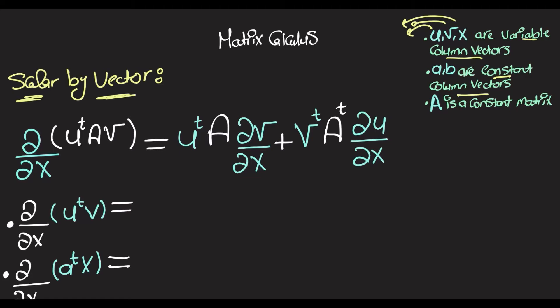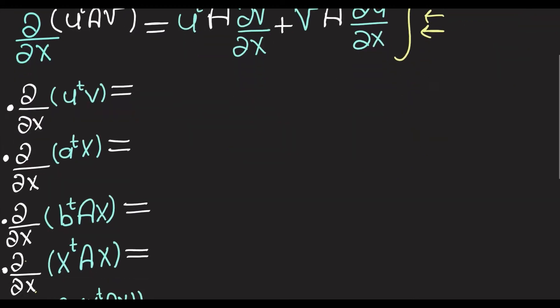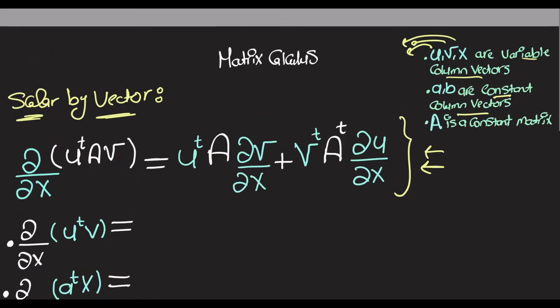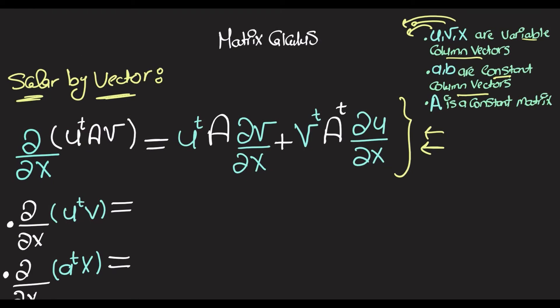The most important identity here is going to be this one, and using this one we'll try to find all of these. What's basically happening here is that we're having a row vector u-transpose multiplied by a constant matrix A, multiplied by a column vector v. The product of all three will, in the end, give out a scalar one-by-one matrix.